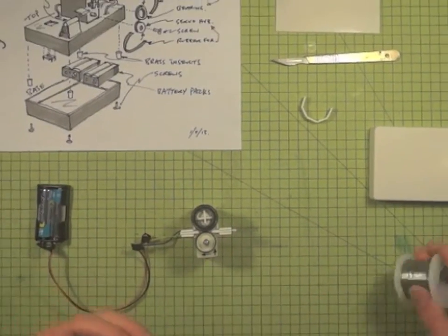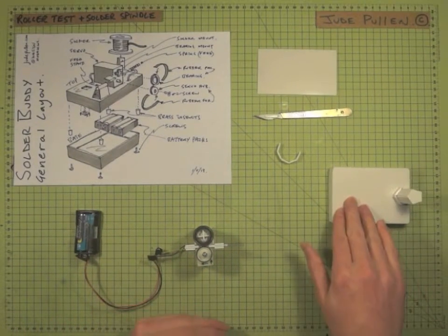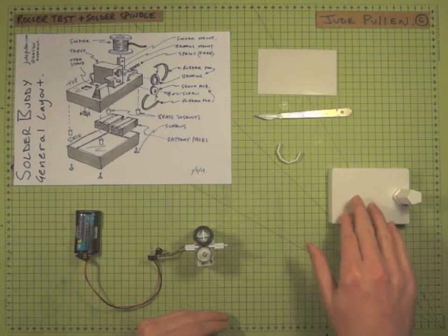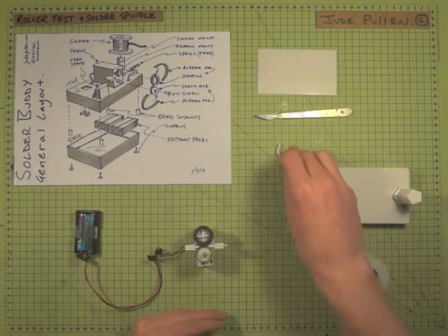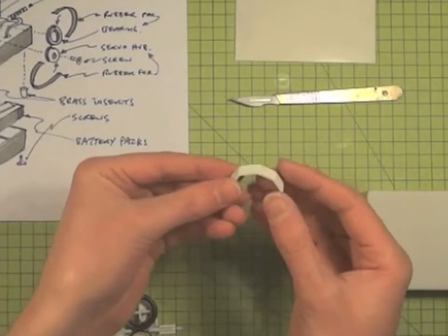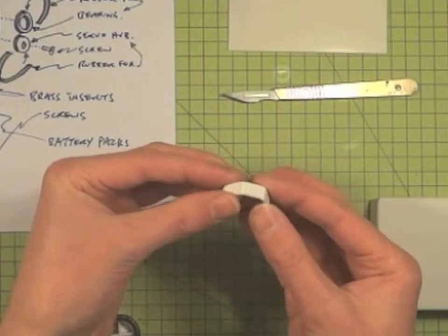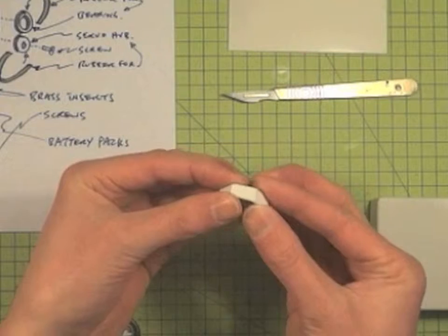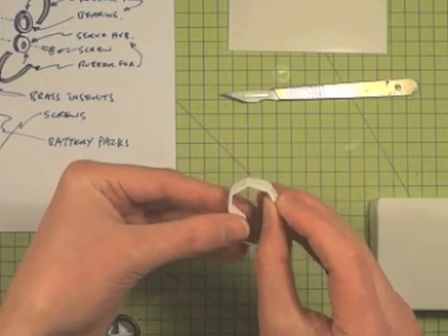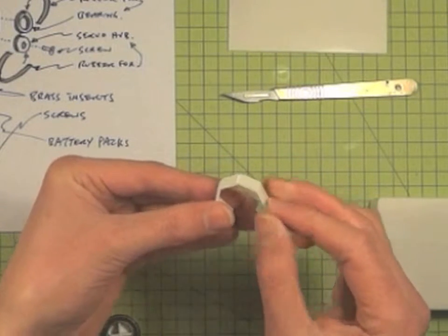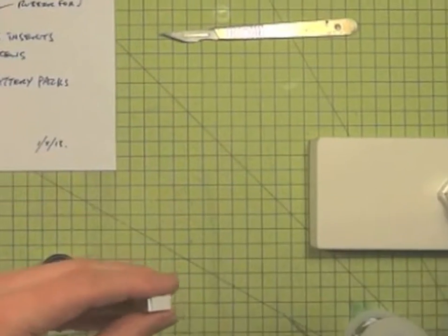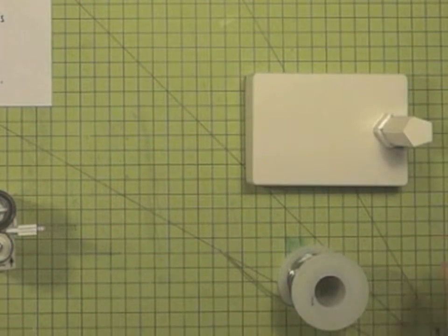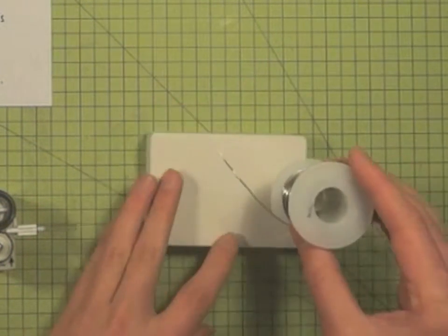So we've got our solder reel and we've now brought back our top. And again using a bit more of the scrap that we had left over, using the partial score and snap almost all the way through, we can create a nice little curved feature like that.